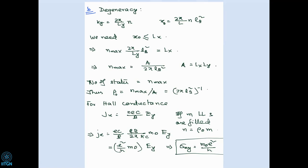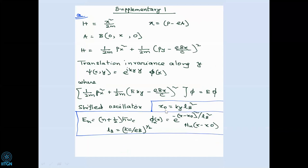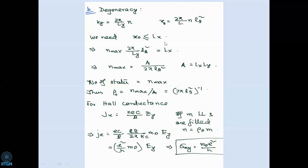That's a heuristic derivation of σ_xy = e²/h × n. Any questions? A student asks to clarify why x₀ must be less than L_x. The answer is that the sample dimension in the x direction is L_x, and the coordinate shift of the wave function must remain within the sample — it cannot go outside — so the maximum x₀ is L_x.